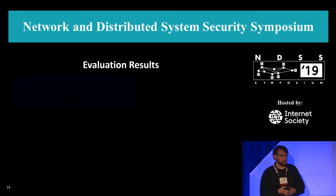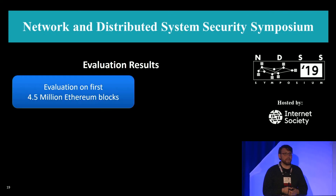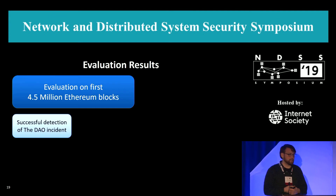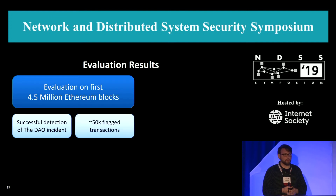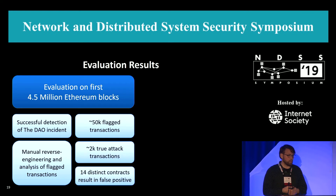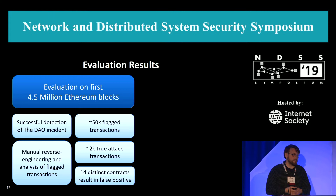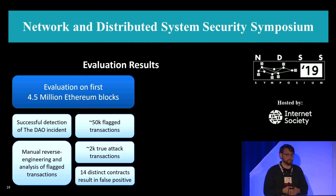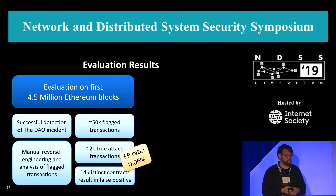We have evaluated Serium by re-executing the first 4.5 million blocks of Ethereum. We successfully detect the DAO incident, and in total we have about 50,000 transactions flagged as attacks. After manual reverse engineering and analysis, we have about 2,000 true attack transactions, and we noticed there are only about 14 functionally distinct contracts which actually result in false positives, leaving us with about a 0.06% false positive rate.